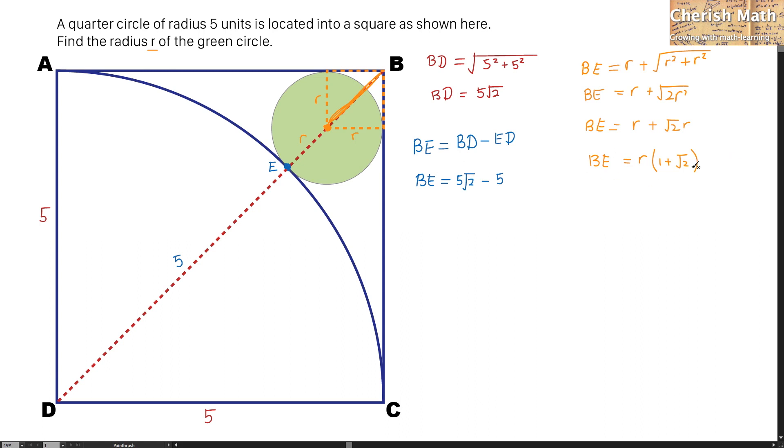And now, the blue BE and the orange BE is the same. So I can equate it directly. That means 5√2 minus 5 equals R bracket 1 plus square root of 2.